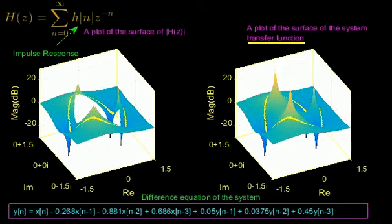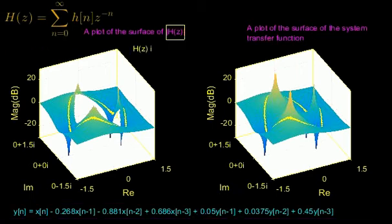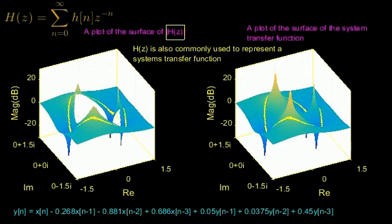The transfer function and the Z transform of the impulse response are related. As you can see, they are equivalent in the regions of convergence and are both commonly represented using the symbol H. In the rest of this video I'm just going to outline this relationship in some more detail.